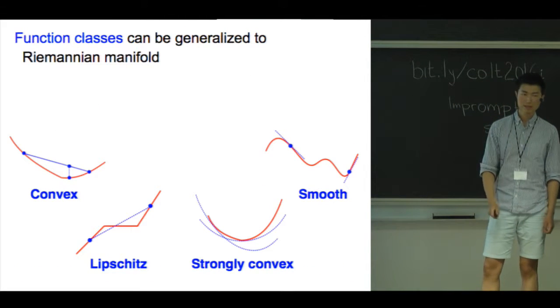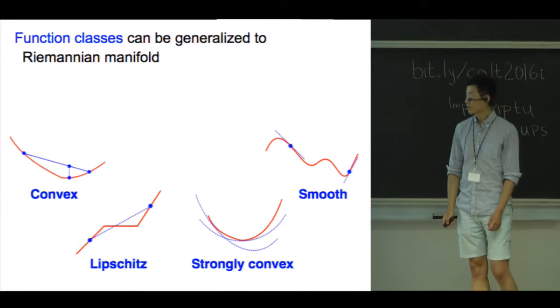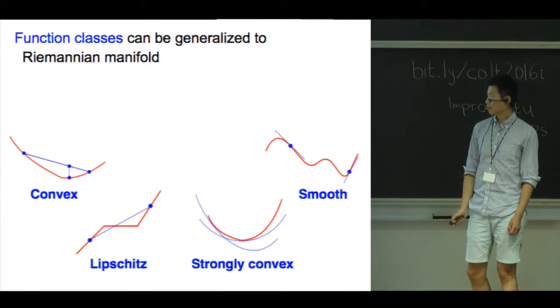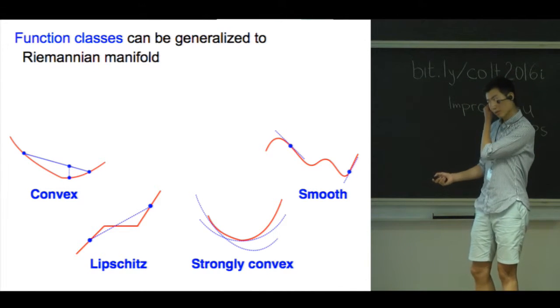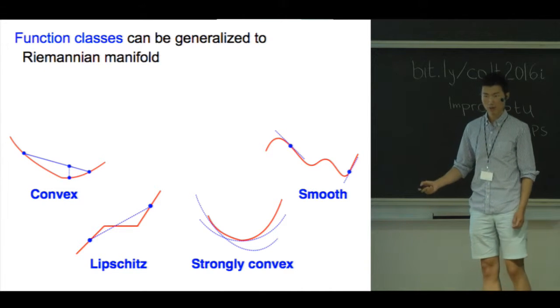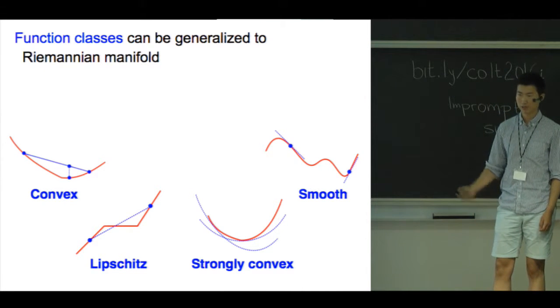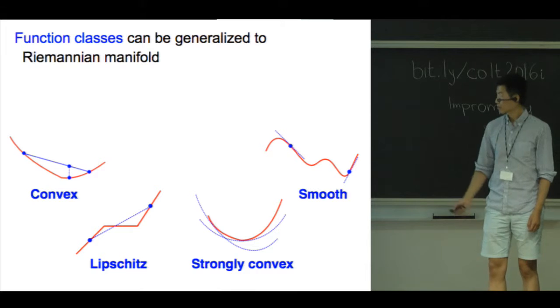Moreover, function classes can also be generalized. In vector space, when we say a function is convex or Lipschitz, we mean that it's convex or Lipschitz with respect to the linear metric we use. Similarly, these definitions can generalize to Riemannian manifolds if we speak with respect to the nonlinear Riemannian metric.